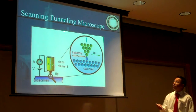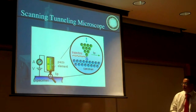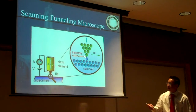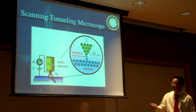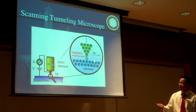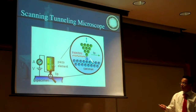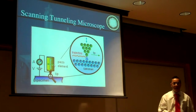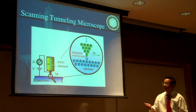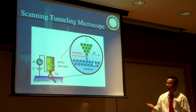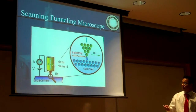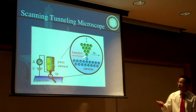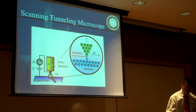Here is our scanning tunneling microscope. As you can see, we have our tip, and as it scans over, the electrons can jump. Depending on how easy or how hard it is for electrons to jump onto the surface, we can know the structure of the sample.